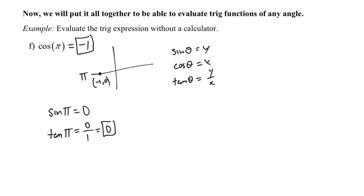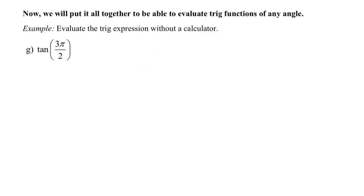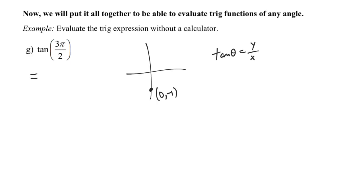Again, for quadrantal angles we use those four axis points and the fact that sine theta is y, cosine theta is x, and tangent theta is y over x. One more quadrantal angle example: tangent of three pi over two. The point at three pi over two is (0, -1). Tangent theta is y divided by x, so this equals negative one divided by zero — I cannot divide by zero. Therefore, tangent of three pi over two is undefined.